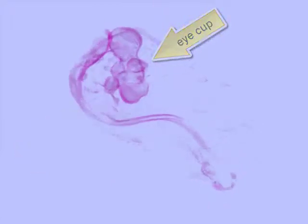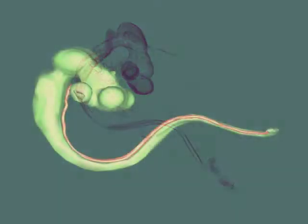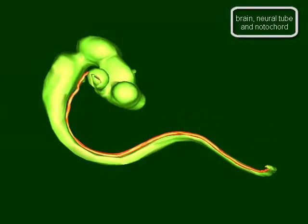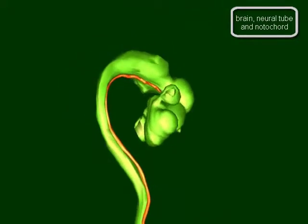From an ectodermal placode, the otic vesicle develops, that in turn will form the inner ear. Now, here is a 3D reconstruction showing both the neural tube and the notochord.